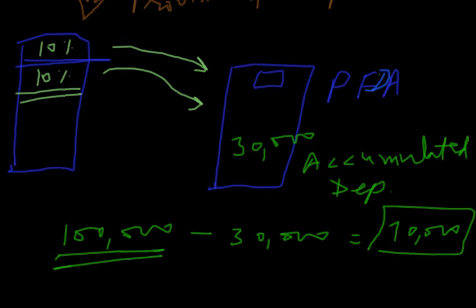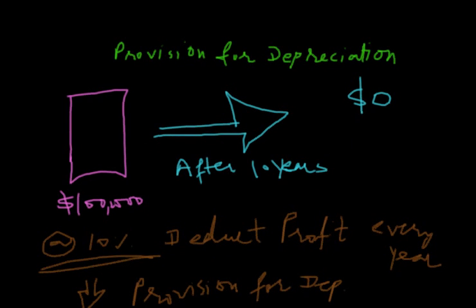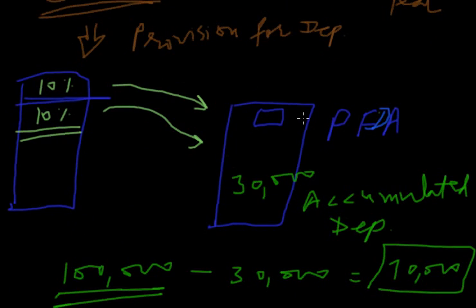Again, to repeat: what is provision for depreciation account? It is just like a reserve out of profit. Suppose we have an asset of 1,000,000 and its value after 10 years will be $0. So we create a reserve, deduct profit at this depreciation rate, and transfer it to the account — that is called the provision for depreciation account. Every year we collect money out of profit in this account.